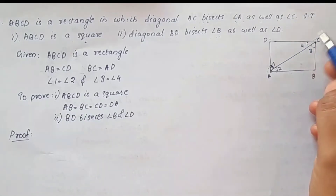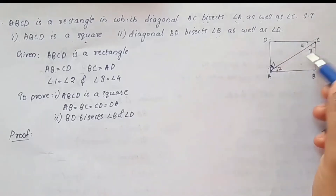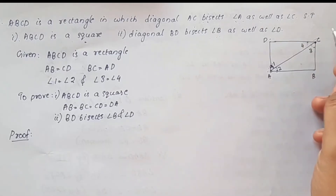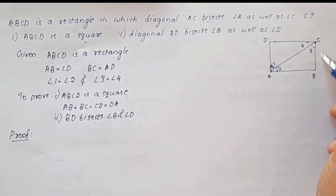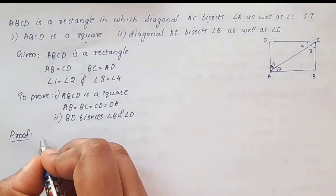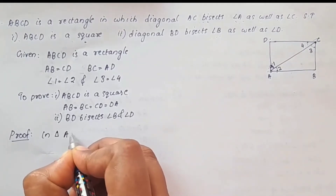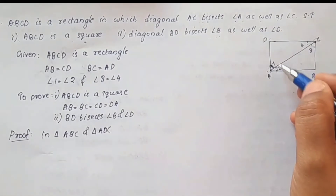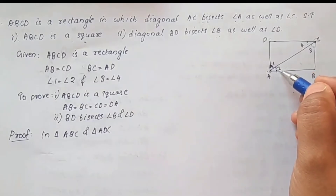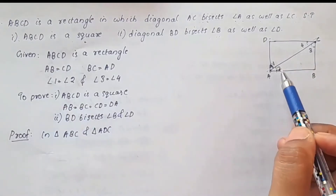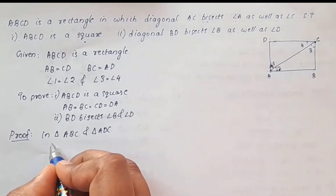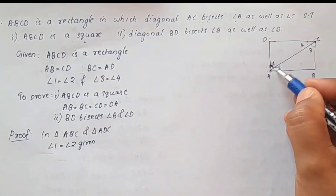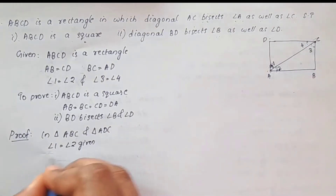We will consider triangle ABC and triangle ADC. Angle 1 is equal to angle 2, which is given. AC is equal to AC, which is common to both triangles.